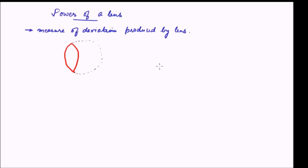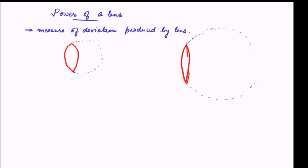But in the case of a thin lens, compared to the first case, this lens is not that curved. Therefore, the radius of curvature of this lens is much, much larger — the circle of which this lens is a part has a much larger radius. And in this case, the deviation is less.